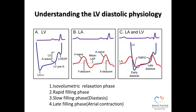First we have to understand the LV diastolic physiology. The diastole is the period of the cardiac cycle that begins with the closure of the aortic valve and ends with the mitral valve closure, during which the ventricle continues to be filled with blood from the atrium. It's composed of four sequential phases. This figure represents the left ventricular pressure throughout the diastole, and this figure represents the atrial cycles during the diastole as it behaves passively due to LV changes.